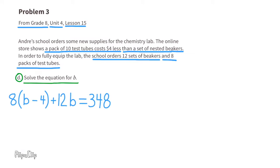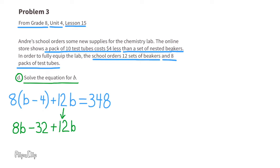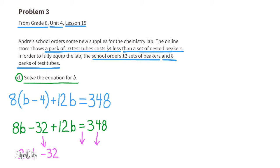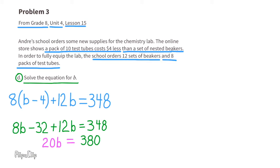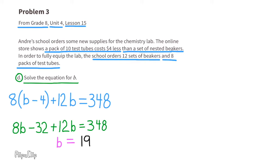Solve the equation for b. Use the distributive property to multiply: 8 times b is 8b, and 8 times negative four is negative 32. Collect like terms: 8b + 12b is 20b. The equation reads 20b − 32 = 348. Add 32 to both sides: 348 + 32 = 380, so now 20b = 380. Divide both sides by 20: b = 19.